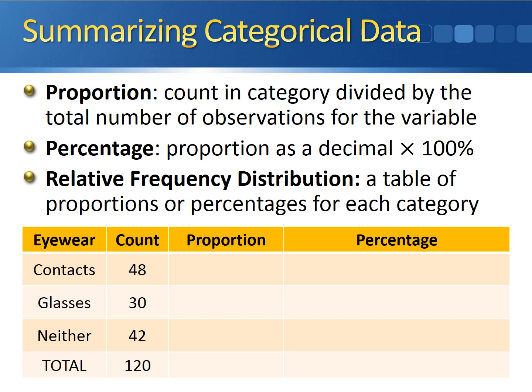We had 48 people who wore contacts out of 120 people overall, so the proportion for contacts is 48 divided by 120, which gives 0.4. For glasses, 30 divided by 120 gives 0.25. For people who wear neither, 42 divided by 120 gives 0.35.